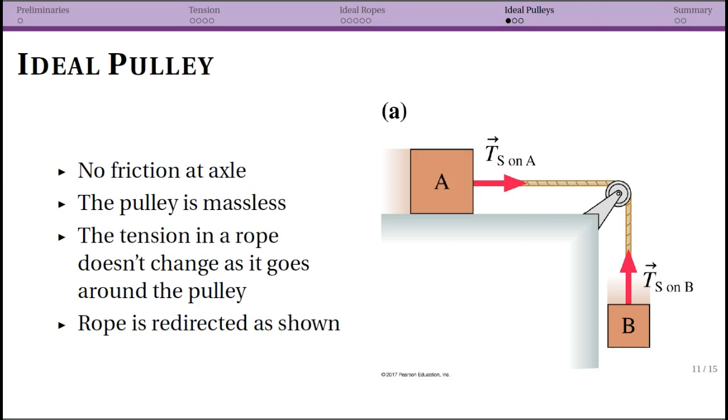Now we're going to talk about pulleys. We talked about ideal ropes. Ideal ropes frequently go with ideal pulleys. The ideal pulley is something we'll return to later when we talk about rotation because it's an interesting situation to change one thing about this and see what happens.